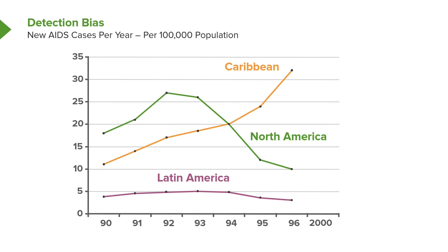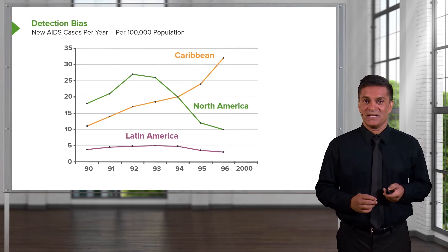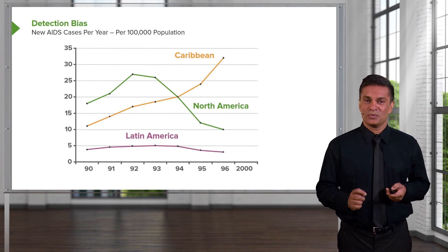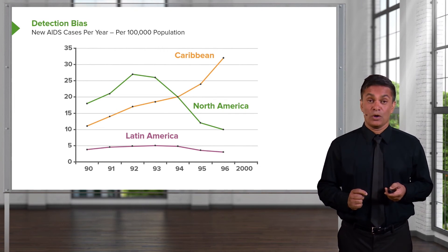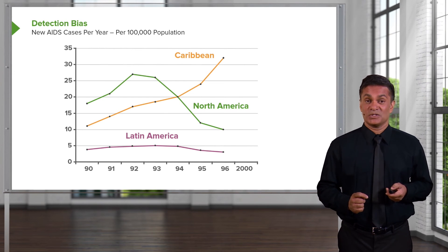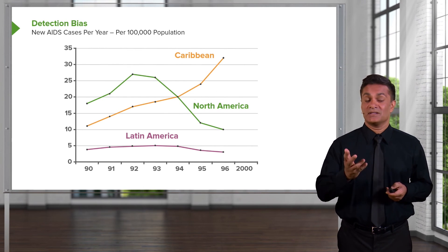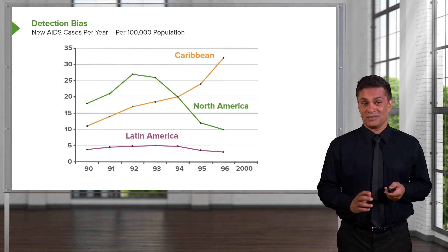I hear all sorts of theories — things like more travelers coming in from different AIDS endemic areas, or the rate of sex work increased, or a variety of different theories. In truth, what was happening in the Caribbean is we started looking for more AIDS cases, so we found more AIDS cases. It was always high, but we only noticed it in the late 1990s. So that graph has the appearance of an increase, but there wasn't an increase. That's classic detection bias.